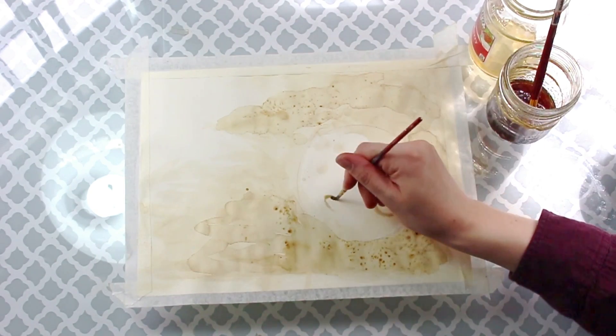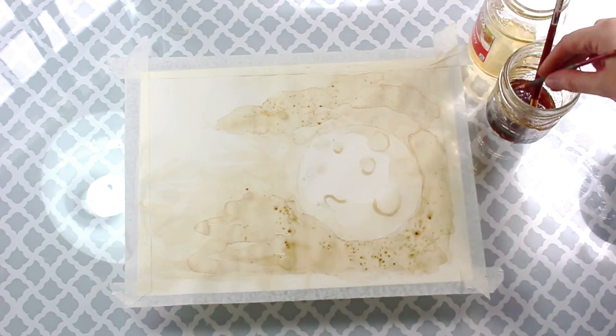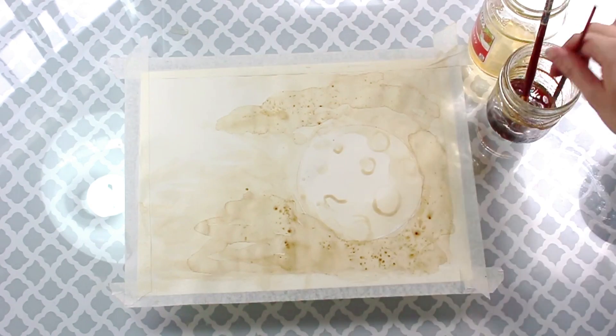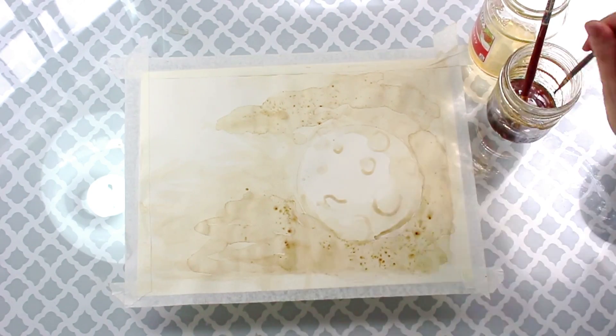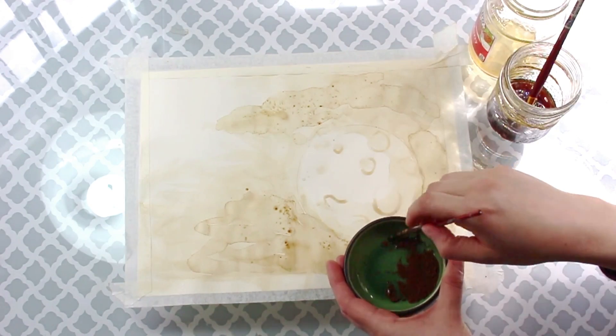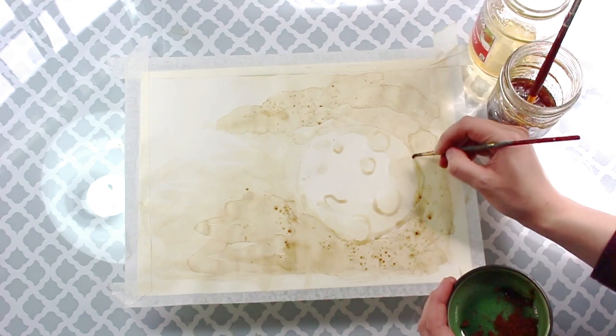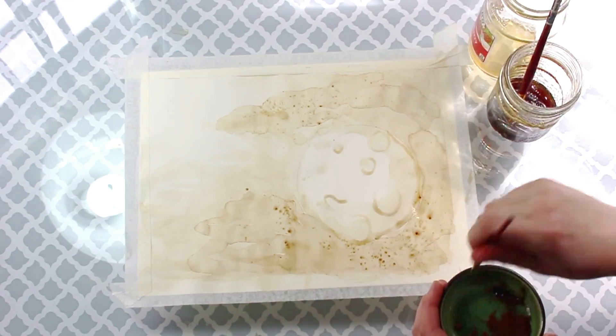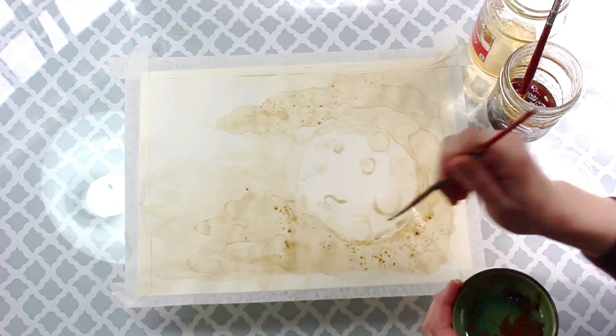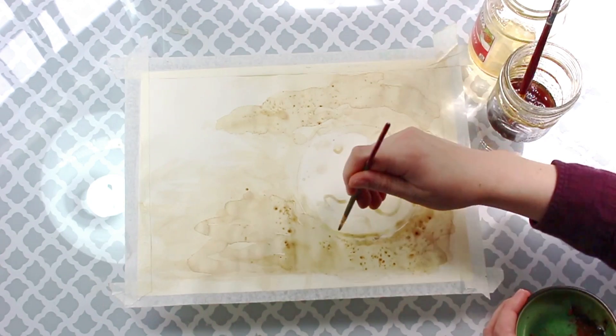Now I'm going to start using my smaller brush here and I'm going to focus on bringing out where all the craters are on my moon and just thinking of where all the dark shadows would be. That's where I'm going to be using the small brush. As I'm needing a darker and darker brown what I can do is I can use some of the instant coffee grounds and mix it with just a little bit of water and this will create an even darker tone.